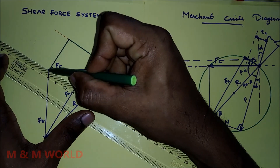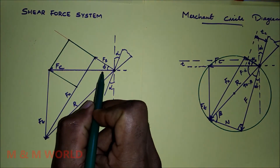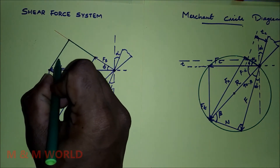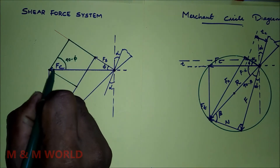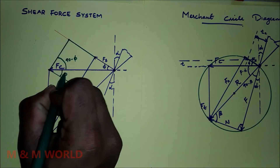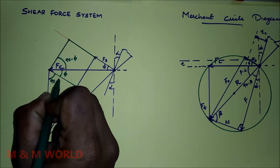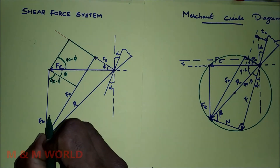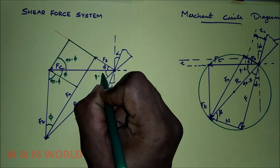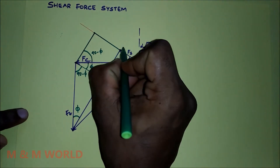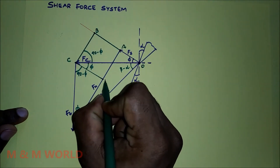Now draw a line perpendicular to this line from this point. This is the normal line. Now marking the angles. This is phi, so this will be 90 minus phi. This is 90. Then this is 90, and this is 90 minus phi, so this will be angle phi. This will be 90 minus phi, and this one is 90, so this will be phi. And this angle is beta minus alpha. Now marking the points O, A, B, C, D, and E.